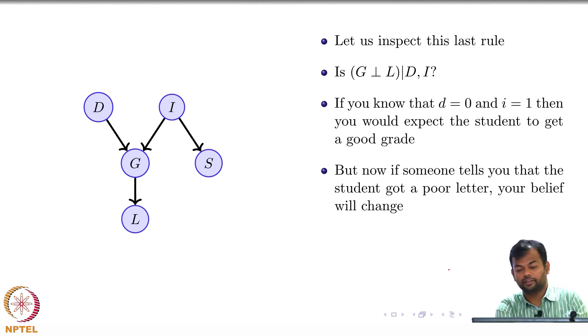If we know that the first two conditions were true—that the course was easy and the student was intelligent—you would expect the student to get a good recommendation letter, right? But now, if someone tells you that the student got a bad recommendation letter, will this belief change?